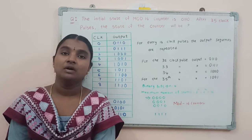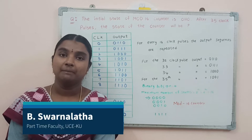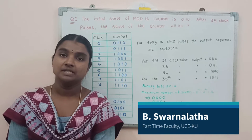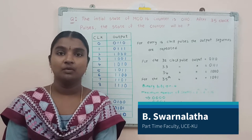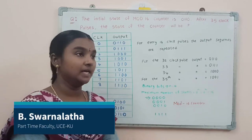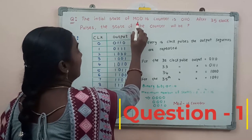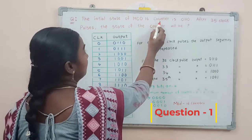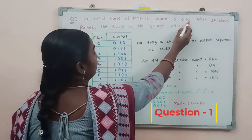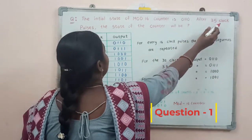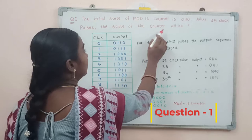In this video, I am going to explain some important questions regarding the topic of counter circuits. The first question: the initial state of a MOD-16 counter is 0110. After applying 35 clock pulses, what will the state of the counter be?